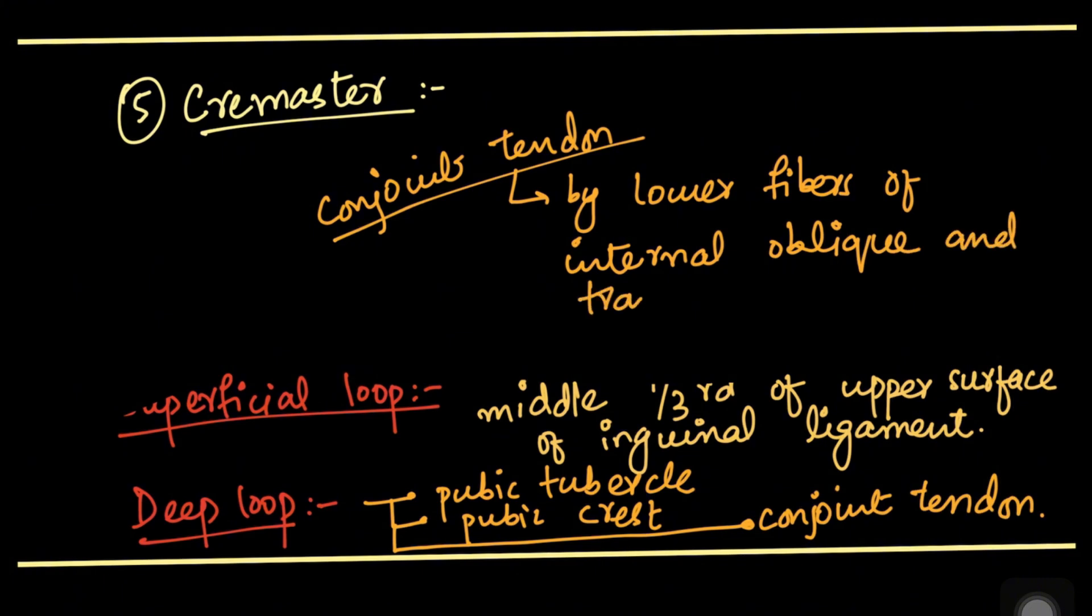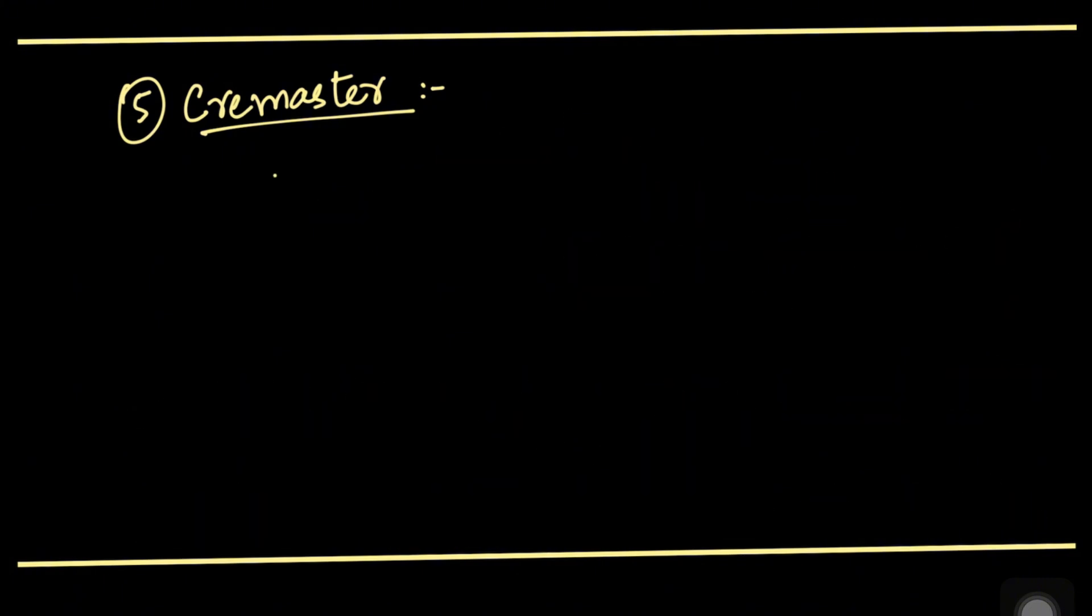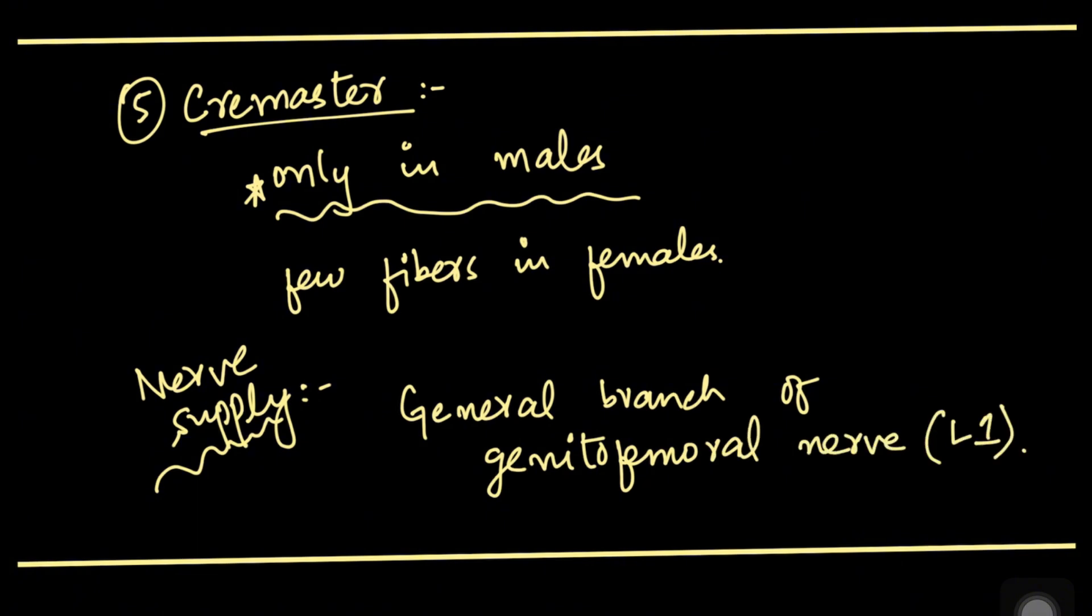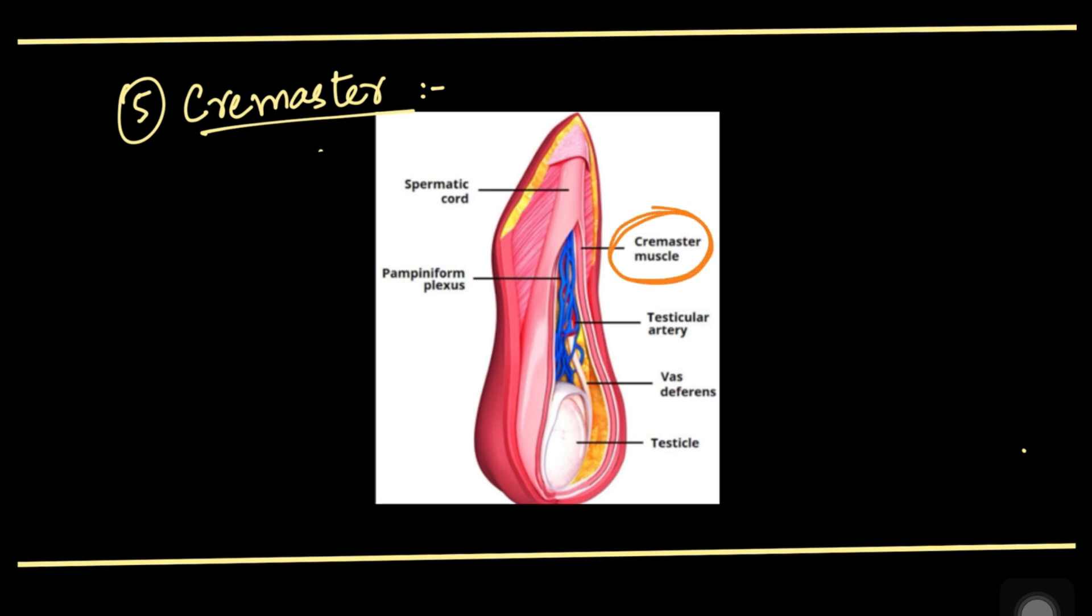The cremaster muscle is found mainly in males, however a few fibers may be present in females. The nerve supply is the genitofemoral nerve, genital branch L1. Here we can see the cremaster muscle.